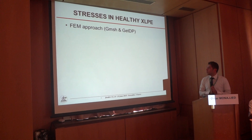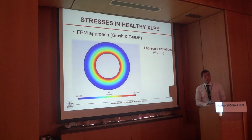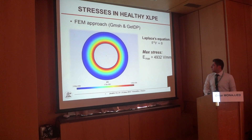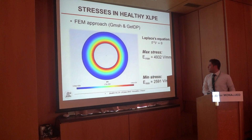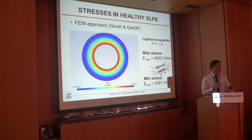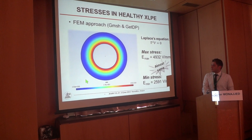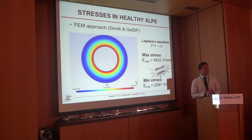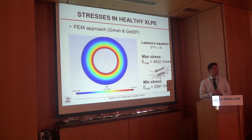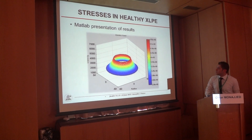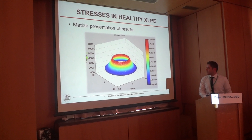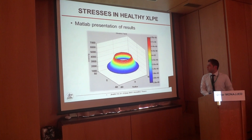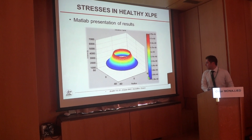We now move to the FEM approach using Gmsh and GetDP, where we solve Laplace's equation: ∇²φ = 0. After solving it, we get a maximum stress of 4522 V/mm and a minimum stress of 2591 V/mm, which is almost the same as the mathematical approach. This figure shows the results — stress ranges from 2.5 kV/mm up to 4.9 kV/mm. To better understand this result, we present it in MATLAB in 3D. We can see the maximum stress on the inner semi-con of 4.9 kV/mm, and that stress decreases to reach its minimum at the outer semi-con of 2.5 kV/mm.